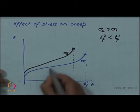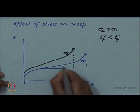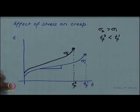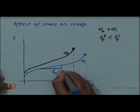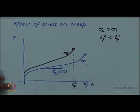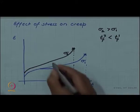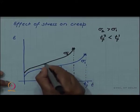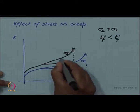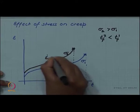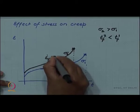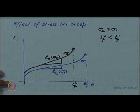But the steady state strain rate, which is the slope in the steady state regime, epsilon steady state at σ1, this is less. With increased stress the slope increases. This is the steady state strain rate at σ2.